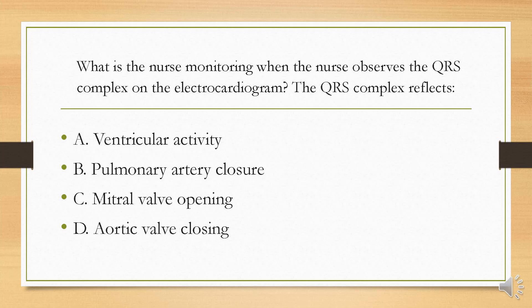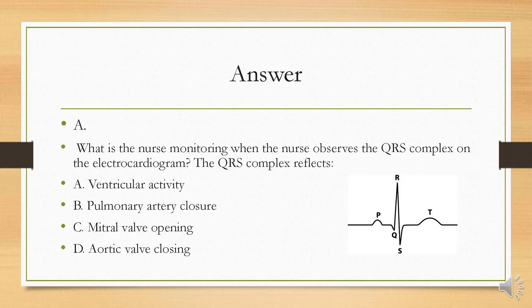What is the nurse monitoring when observing the QRS complex on the electrocardiogram? The QRS complex reflects: is it A, ventricular activity; B, pulmonary artery closure; C, mitral valve opening; or D, aortic valve closing? Your answer is A. The QRS complex represents the sum of all ventricular muscle cell depolarizations. On a rhythm strip, the QRS complex tends to be bigger than the other waveforms because the ventricles are working the hardest in terms of depolarization and pushing out blood.